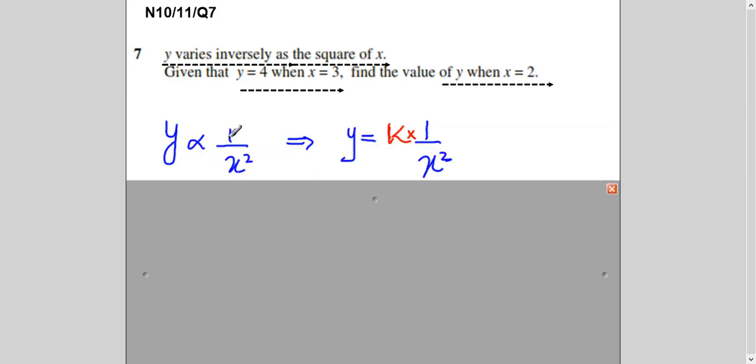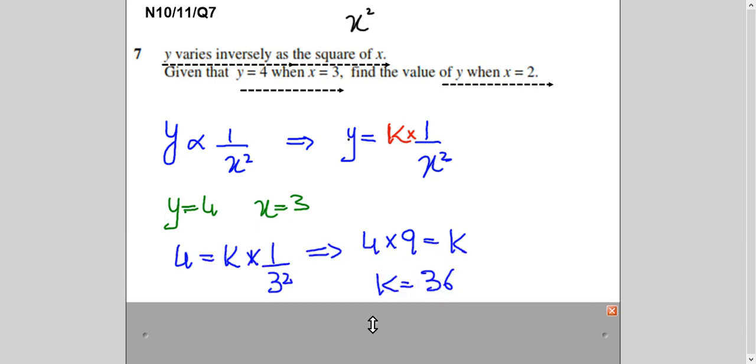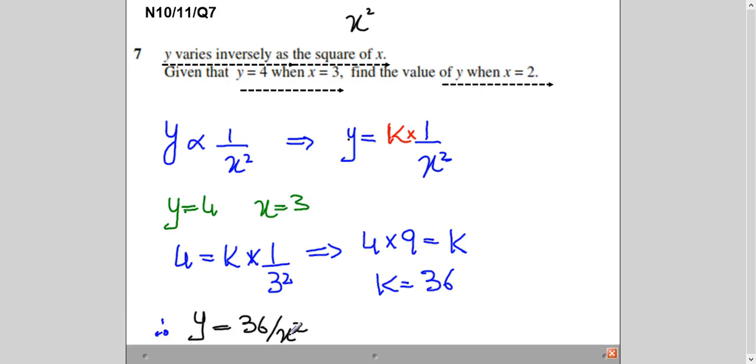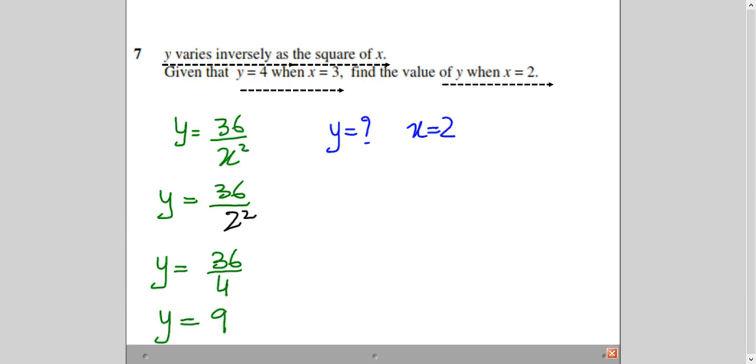So when question says Y is inversely proportional to square of X. Square of X means this. In the previous question he wrote X square himself. So language changes but the meaning is same. So when you remove proportionality symbol you write equals to K. So now this is given to you. So with the help of this given thing you can find out the value of K. Because now you know your Y and X. And you got your K. And question is saying find Y when X is 2. So you will substitute in place of X the value 2. And you will get your value of Y. So you got here 9.